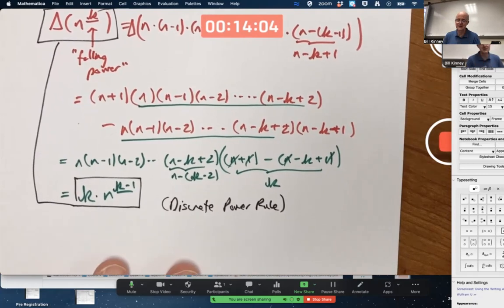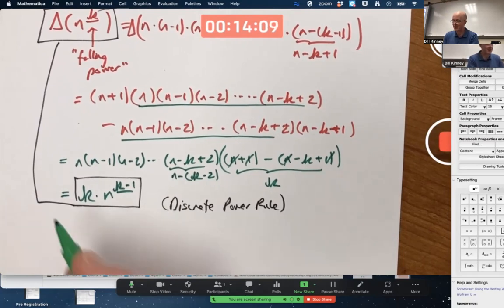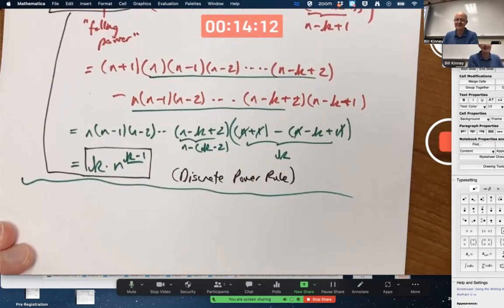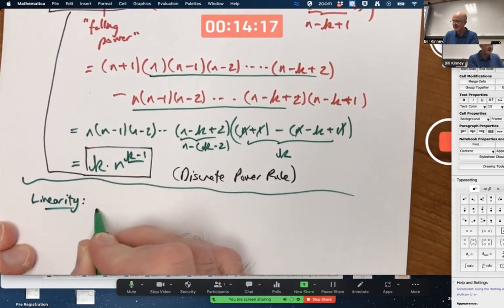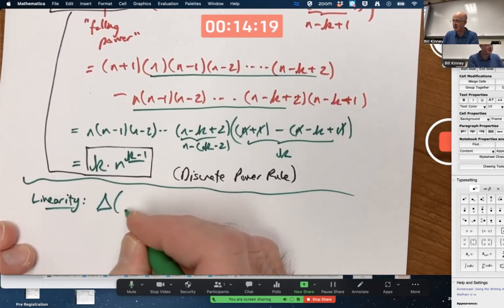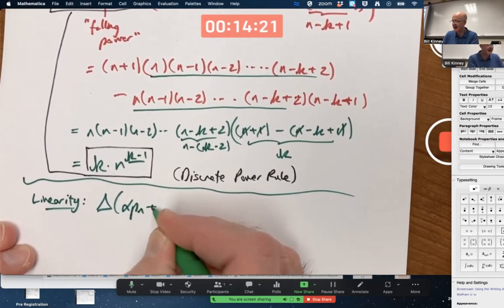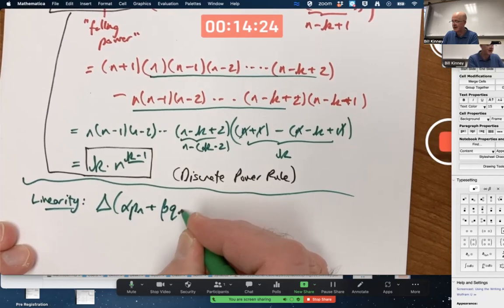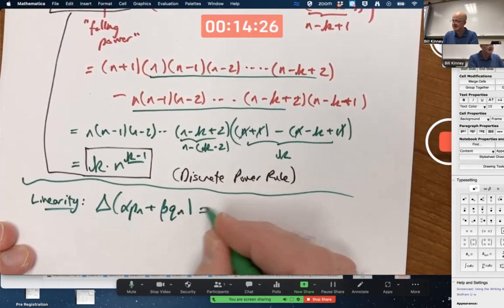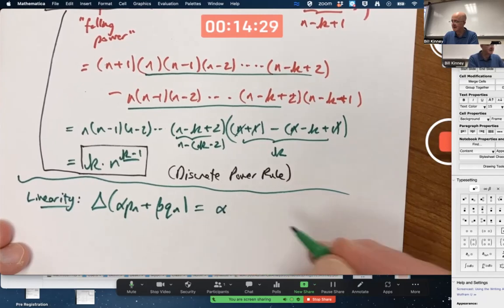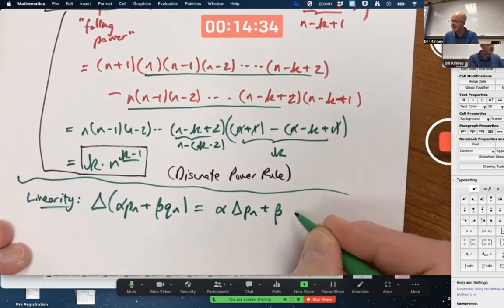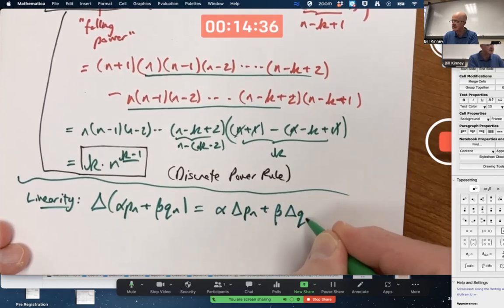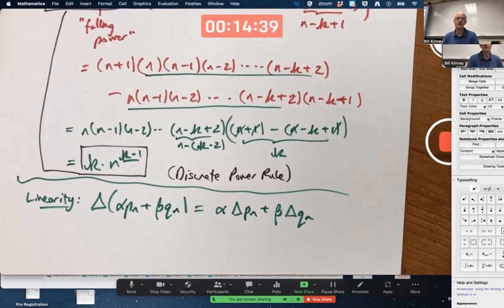Before we talk about discrete integration, though, we should remind you that there are other properties. There's a linearity rule. The forward difference operator applied to a linear combination, alpha times P_N plus beta times Q_N, is just like in ordinary calculus, the first constant, alpha times the derivative of the first function, plus the second constant, beta times the derivative of the second function, derivative being discrete derivative here.